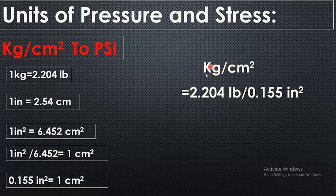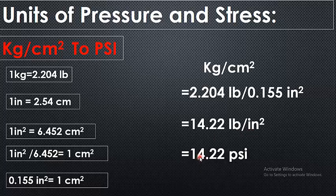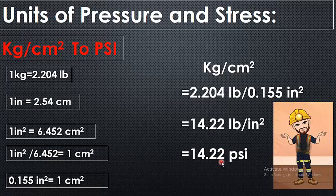Putting the values together — 1 kg equals 2.204 lb and 1 centimeter square equals 0.155 square inches — and simplifying, we get 14.22 lb per square inch. So the answer is: 1 kg per centimeter square is equal to 14.22 psi.